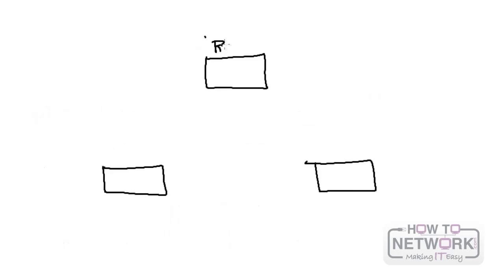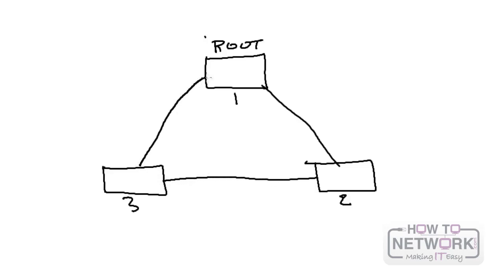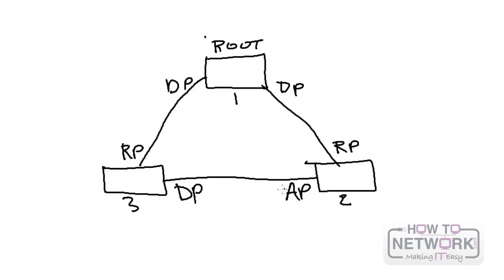In a typical spanning tree environment, we have one root switch — here switch one is the root. The root never has root ports; it only has designated ports. Switch two and switch three both have root ports, which is the forwarding port closest to the root bridge in terms of path cost. Switch three also has a designated port, which is one forwarding port on each LAN segment. Switch two has an alternate port, which is the best alternate path to the root bridge on that same segment.